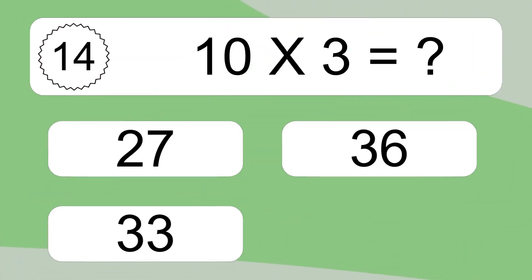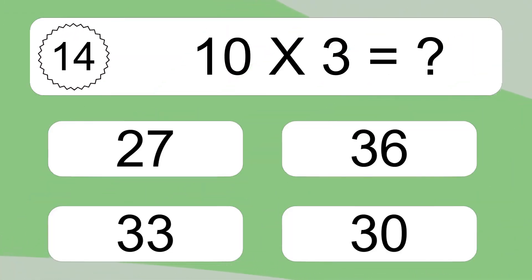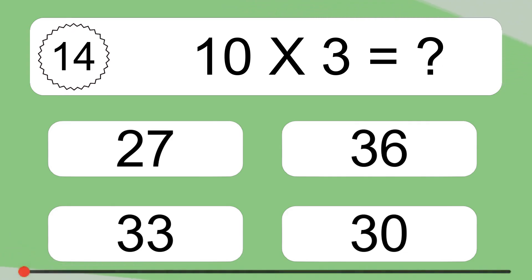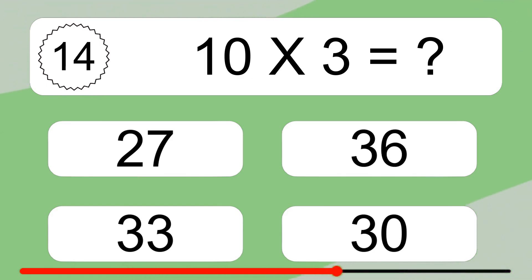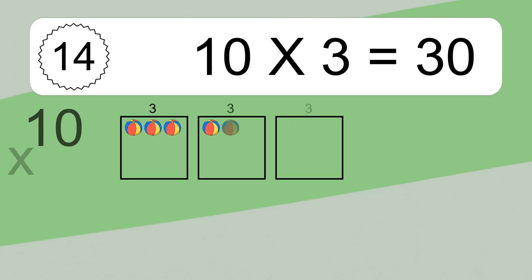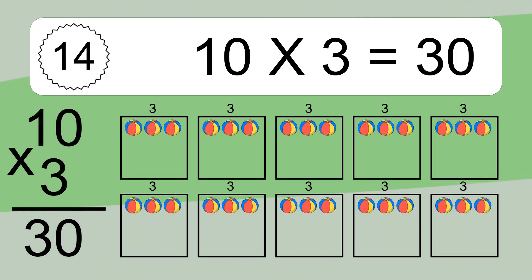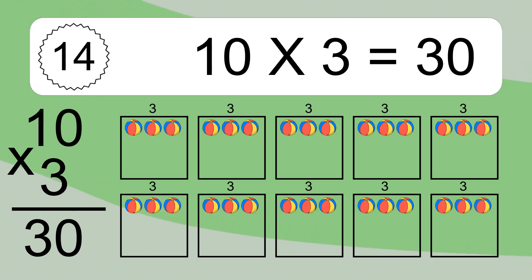10 times 3 equals what? 10 times 3 equals 30. We have 10 boxes, and each box has 3 colorful balls inside. If you count all the balls in all the boxes together, you will have 10 times 3 balls. This equals 30 balls.